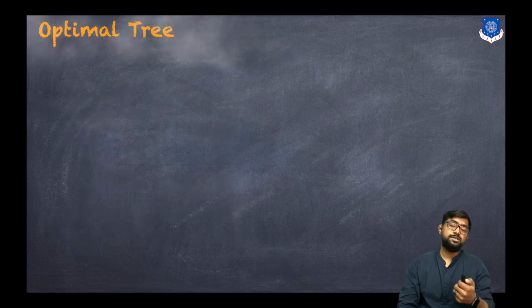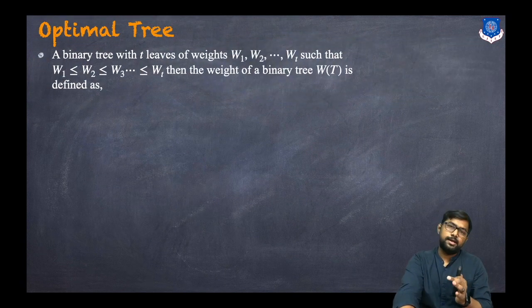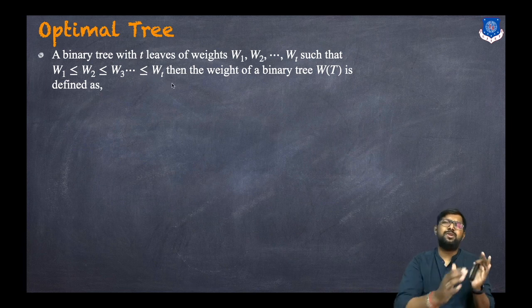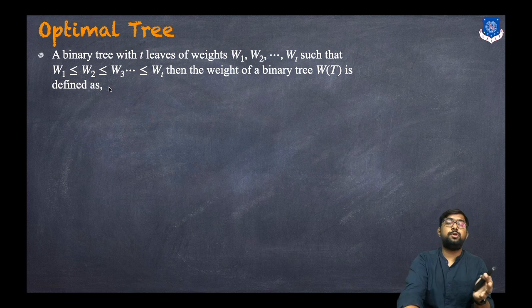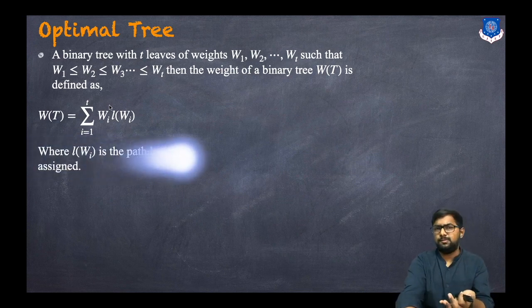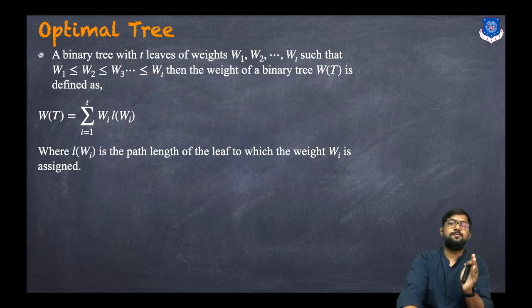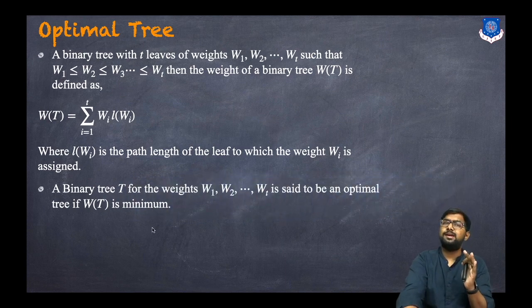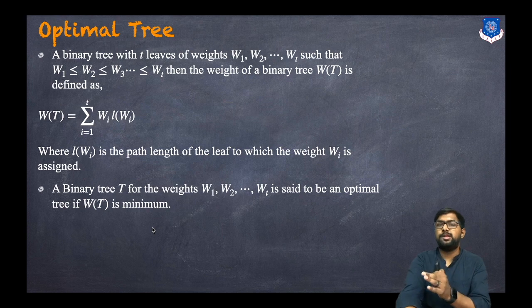Let us consider what is an optimal binary tree. A binary tree with t leaves of weights w1 ≤ w2 ≤ ... ≤ wt has its weight defined as the sum: sigma from i=1 to t of w(i) multiplied by l(w(i)), where l(w(i)) is the path length from the root to the leaf to which the weight is assigned. A binary tree is said to be optimal if this total weight is minimum.